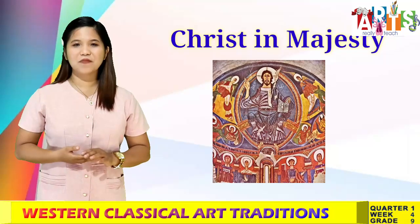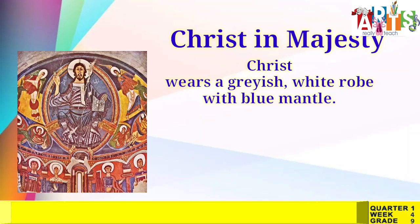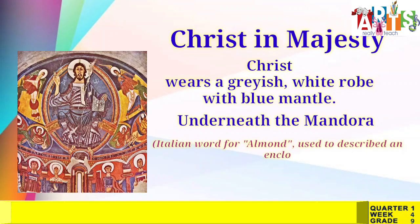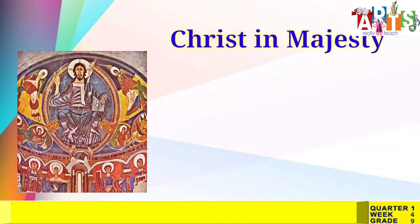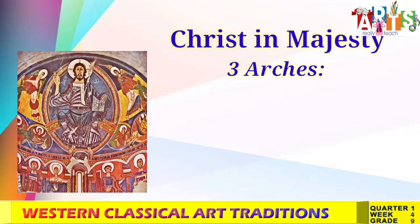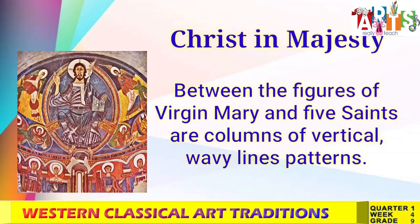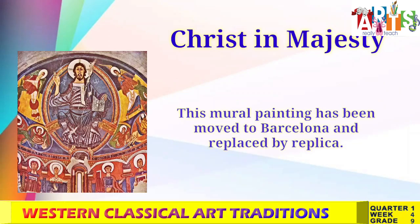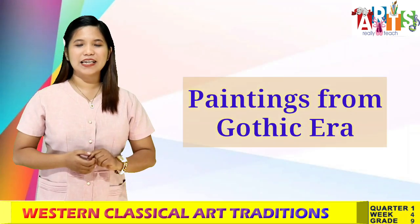Christ in Majesty is an example of Romanesque painting. Christ wears a grayish white robe with a blue mantle. Underneath the Mandorla — the Italian word for almond, used to describe an enclosure surrounding holy figures in paintings — is a black band with white writing. On each side of the center window are three arches resting on columns with capitals in green, red, and black. Between the figures of the Virgin Mary and five saints are columns of vertical wavy line patterns. This mural painting has been moved to Barcelona and replaced by a replica.